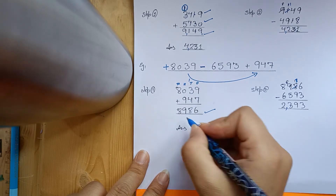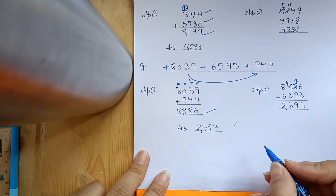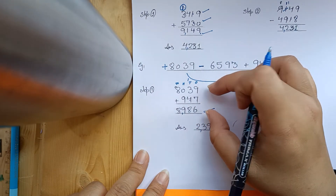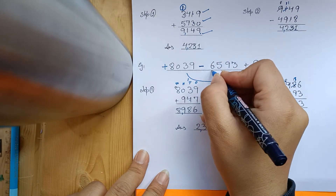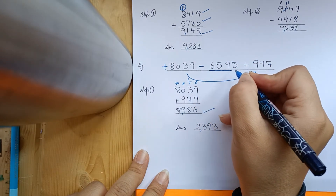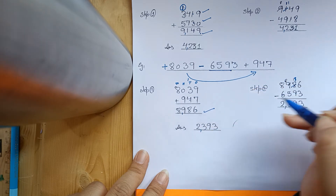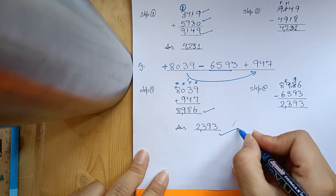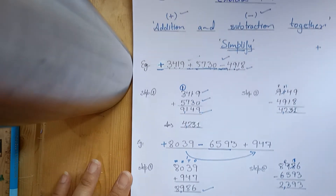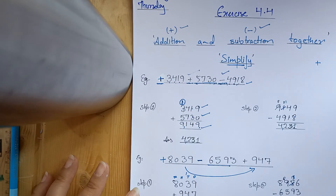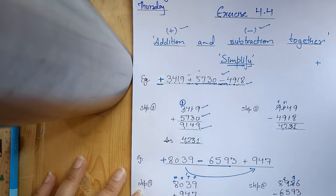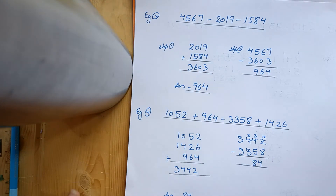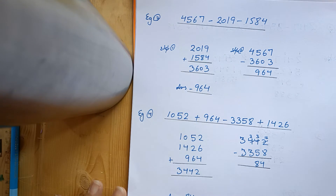So this is your answer. We can't leave here because we have a minus number — we will minus this number, and then our final answer becomes this. So we will give you some more examples so that you can learn more.